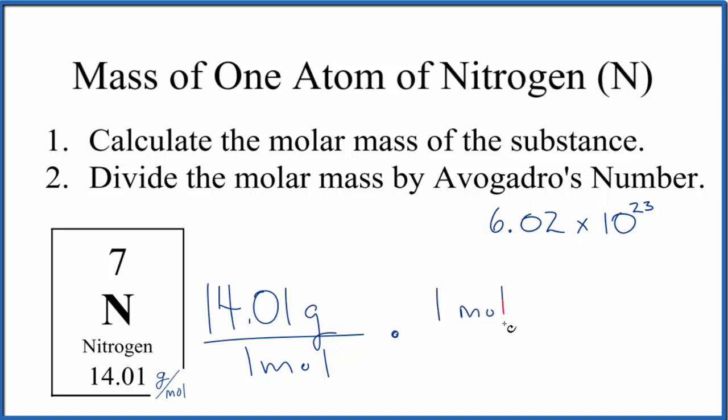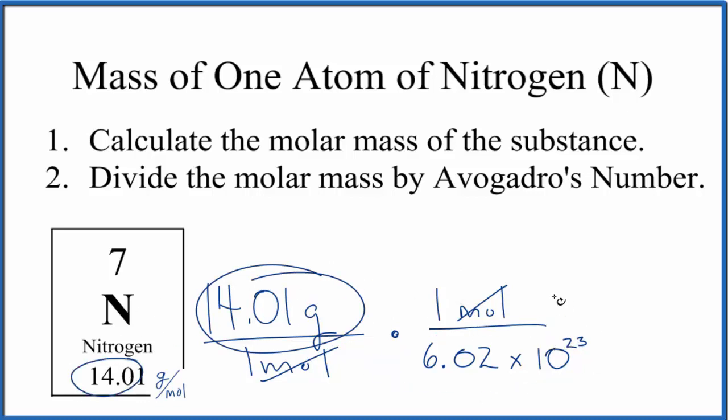When we multiply, we have moles on the bottom and the top, they'll cancel out and leave us with grams. We knew we did it the right way. In essence, we're just dividing the atomic mass of nitrogen, the average atomic mass, by Avogadro's number.